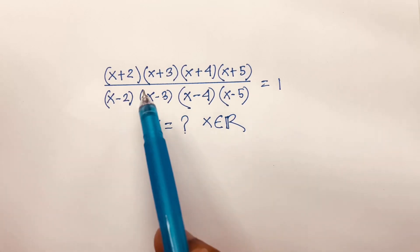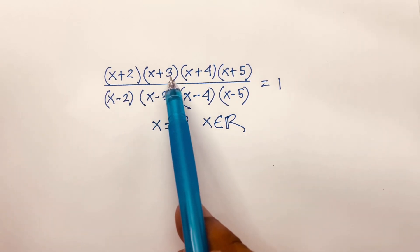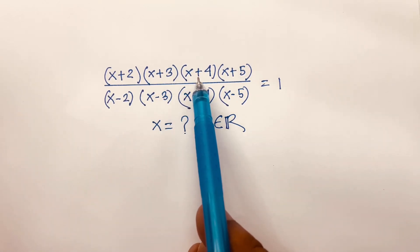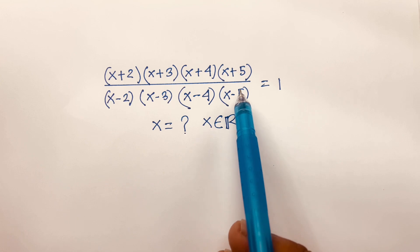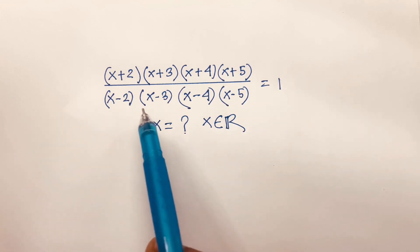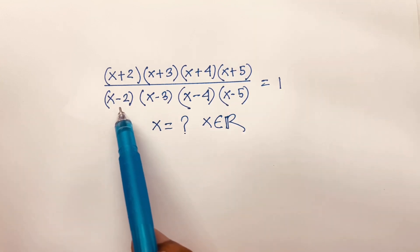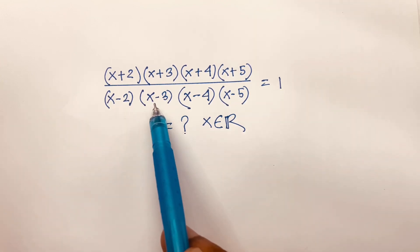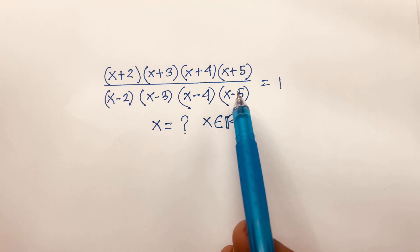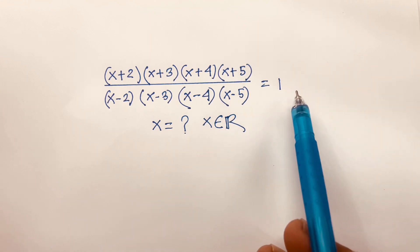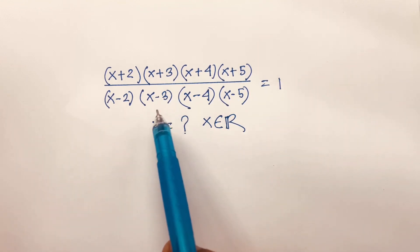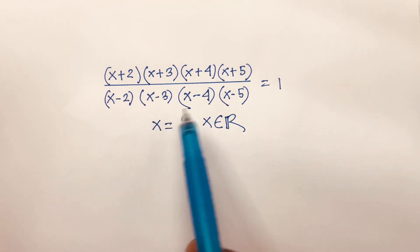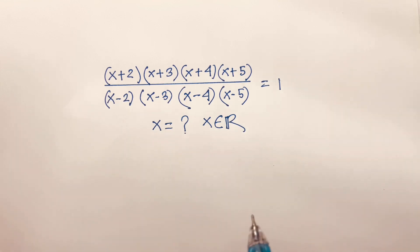How to solve: x plus 2, x plus 3, x plus 4, x plus 5 over x minus 2, x minus 3, x minus 4, x minus 5 is equal to 1. We will find out what is the value of x, where x is a real number.